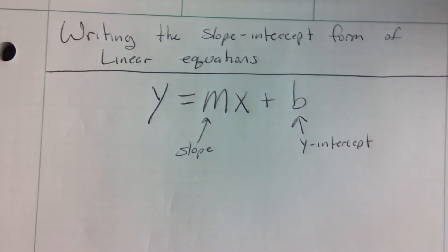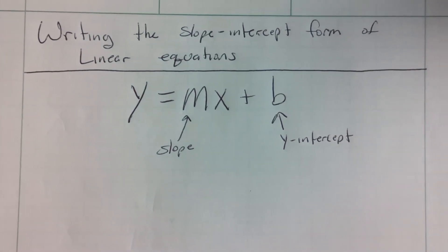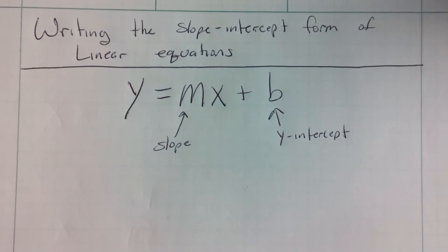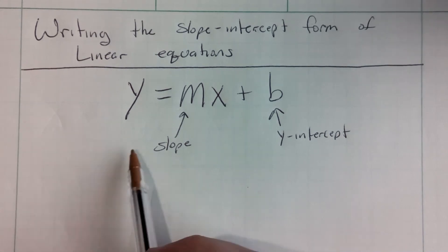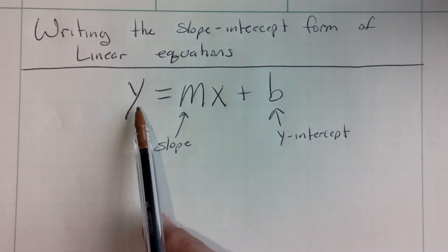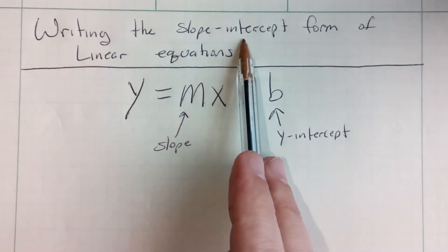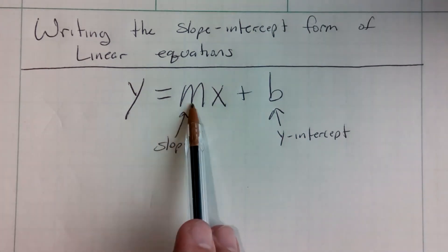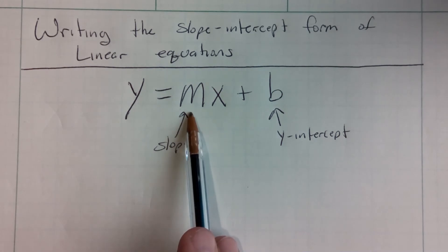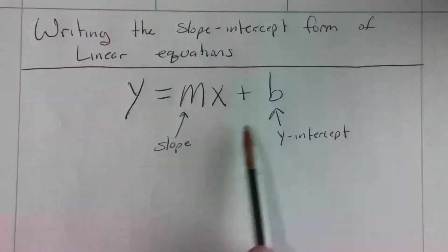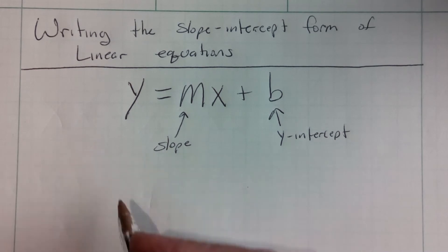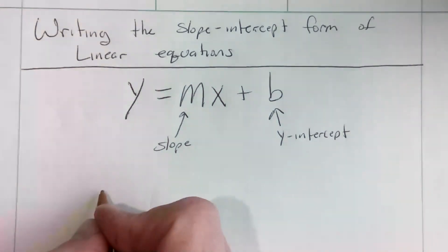Welcome. Today we're going to be learning how to write the slope-intercept form of linear equations given a variety of different information, but not a graph. They will make some very simple. Now remember, a linear equation in slope-intercept form is just y equals mx plus b, where m is a number that is the slope, and b is a number that is the y-intercept. And so they might make it as simple as this.